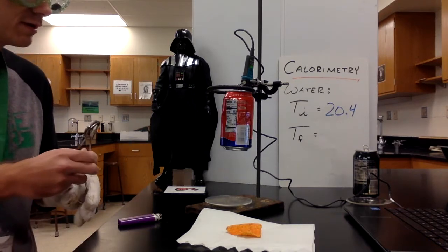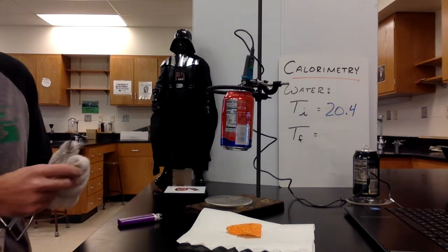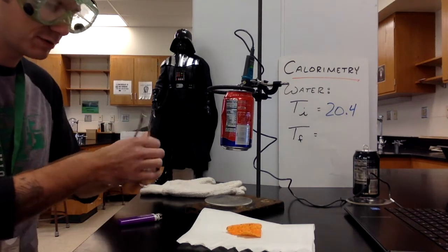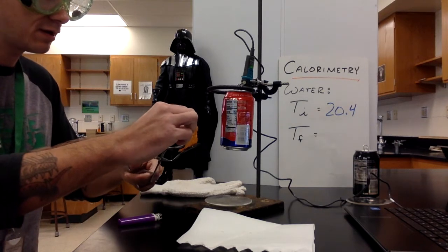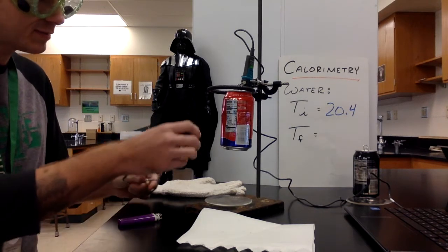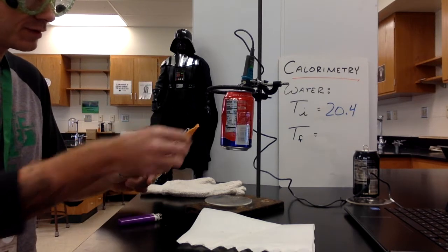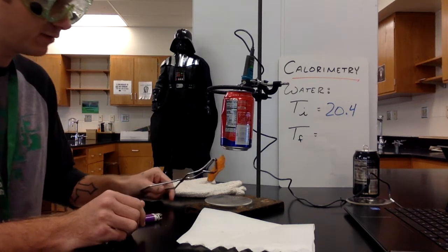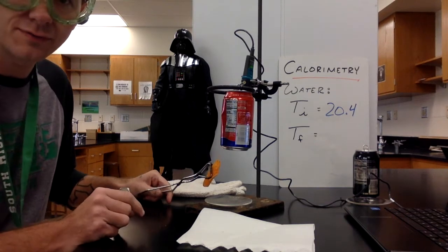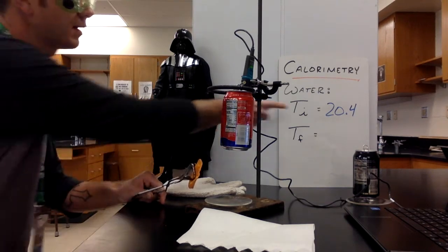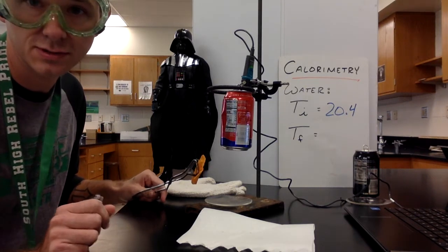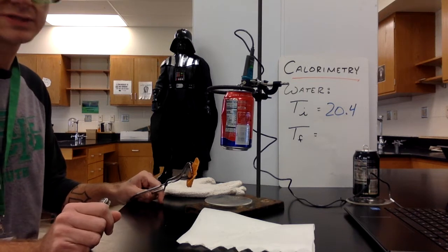What I'm going to do is heat up this particular Dorito. It needs a little coaxing to get some of that chemical energy out. We're going to burn the sample underneath this makeshift calorimeter, which is a can holding 50 milliliters of water. I measured the initial temperature of the water as 20.4 degrees Celsius.